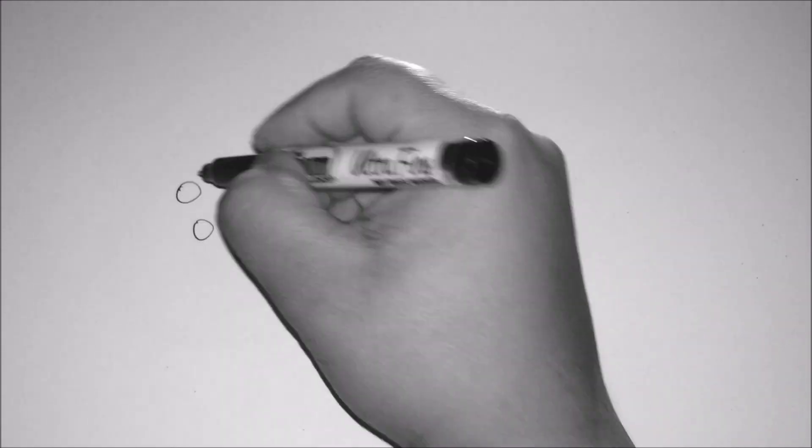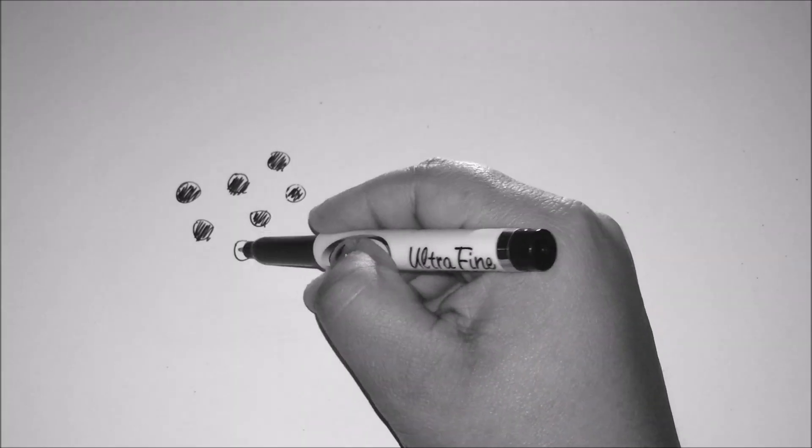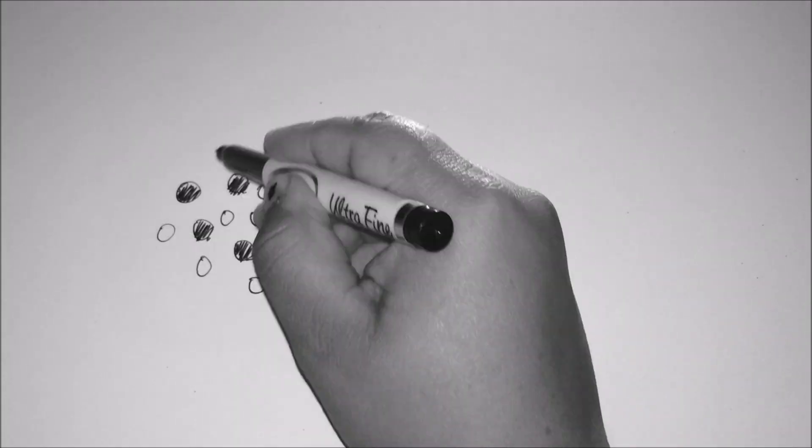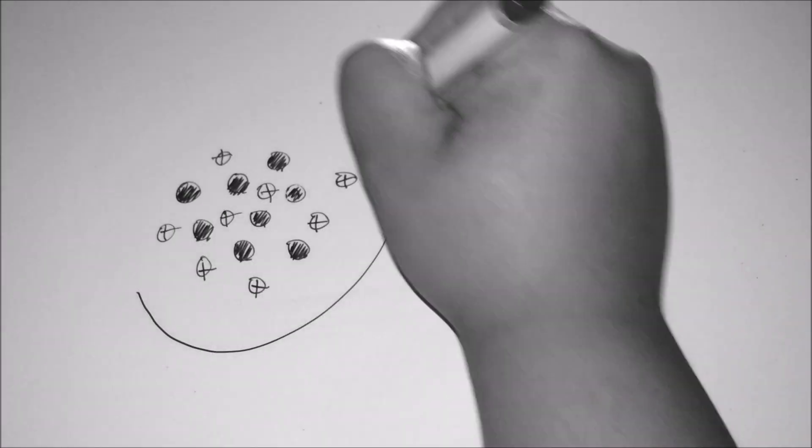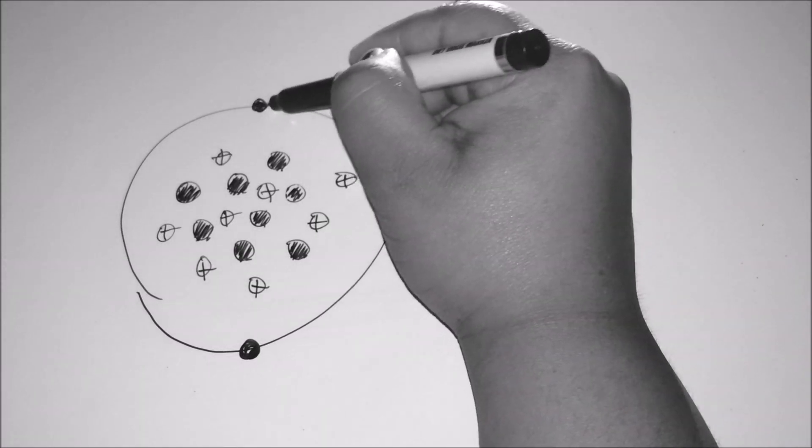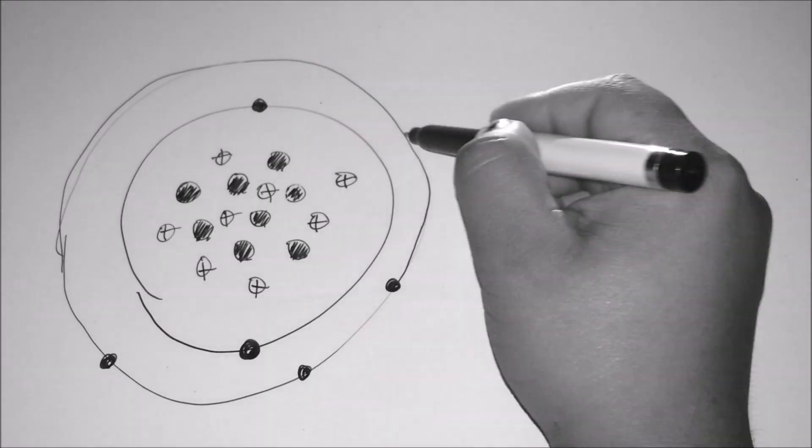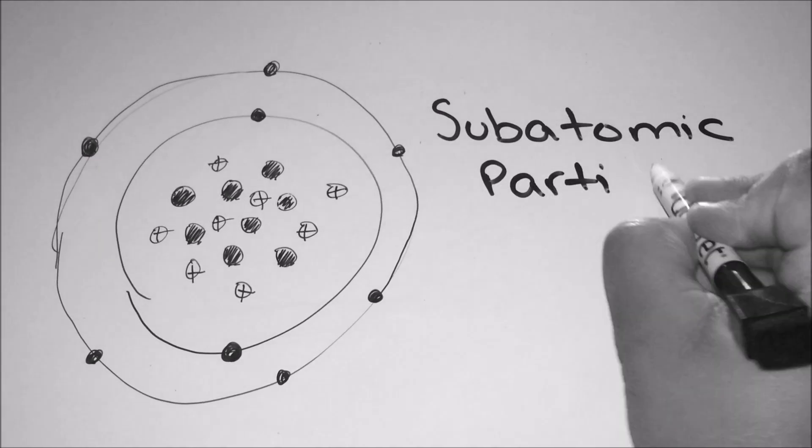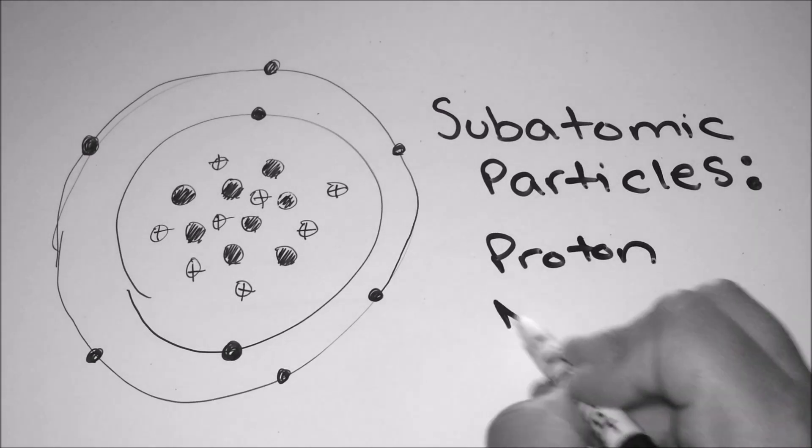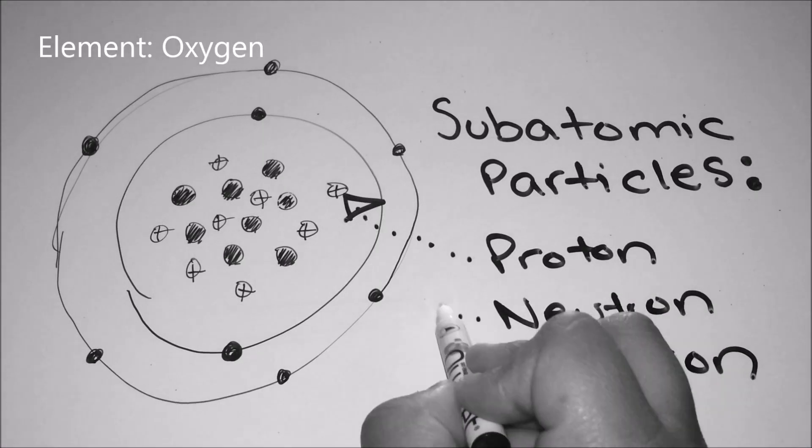A basic atom is composed of three things called subatomic particles. In the center of an atom is a nucleus which has two of these subatomic particles, which are a proton, positively charged, and a neutron, neutrally charged or not charged. Orbiting around the nucleus is the electron which is negatively charged. Atoms that have a certain amount of these subatomic particles are called elements. An example of an element is the famously known oxygen. Oxygen has eight protons, eight neutrons, and eight electrons.